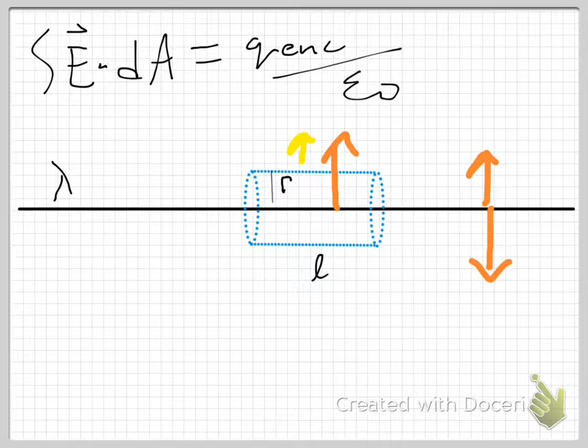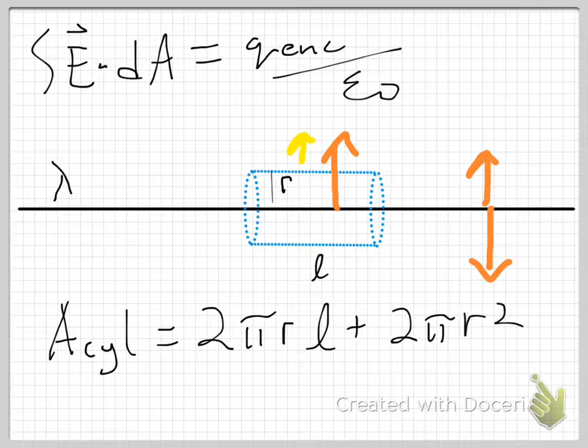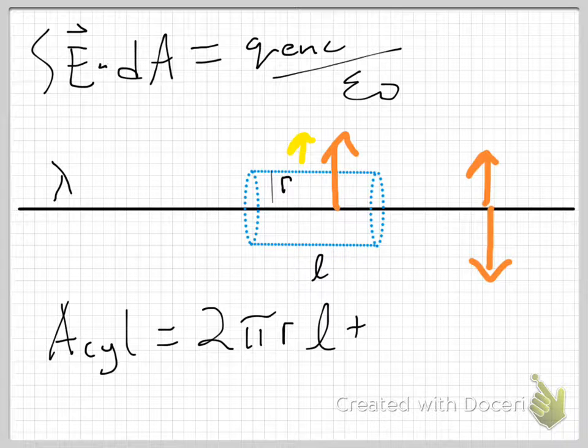Same process as I've been doing. The E field is constant because we're equidistant from the line of charge. E comes outside of the integral, which leaves us with the integral of dA, which for a cylinder, the area is 2 pi r times L, that's the area of the label, plus 2 pi r squared. This contribution comes from the ends. But we've already said that our contribution to the flux from the ends is zero. The only area that we're concerned about is the area of the label because that is the only surface through which the electric field passes.